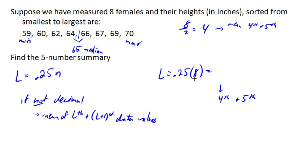25% of eight is two, not four. So we're going to use the second and third data values. So if the second and third data values are here and here, we're going to find the mean. Just to clarify, we're going to find the mean of the second and third data values. So the mean of 60 and 62 is 61.